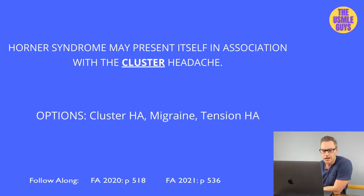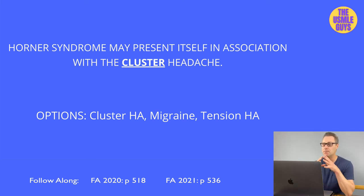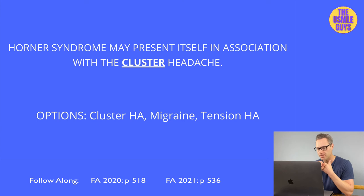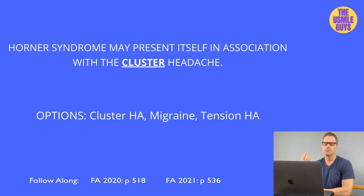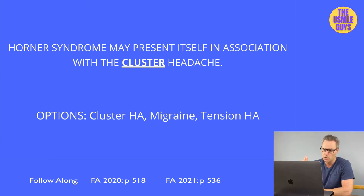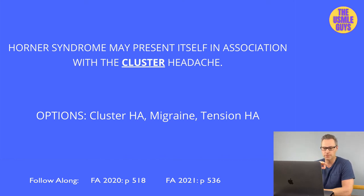The cluster headache is a very painful type of headache characterized by unilateral pain behind the eye, typically presenting with autonomic symptoms like rhinorrhea, lacrimation, and conjunctival injection — a red eye leaking fluid — in addition to pulsating pain behind the eye. Horner syndrome is also linked to cluster headache; recognize it by its symptoms: ptosis and anhidrosis ipsilateral to the lesion, and miosis.